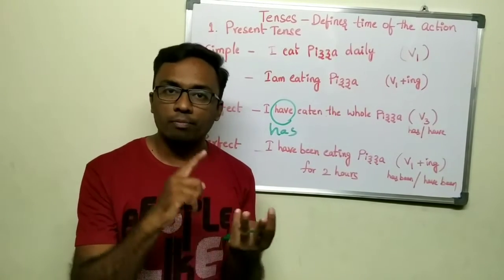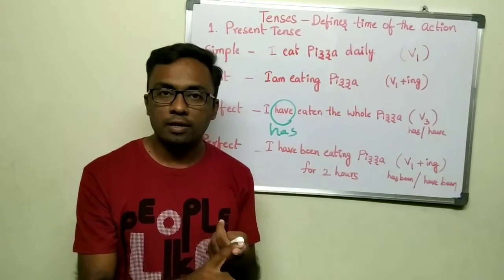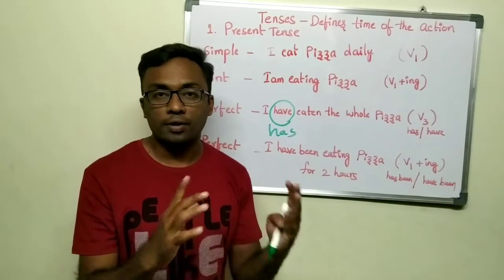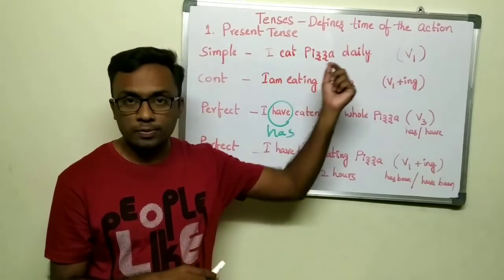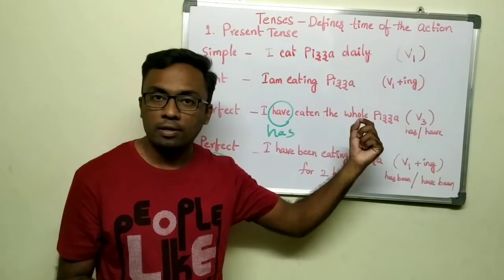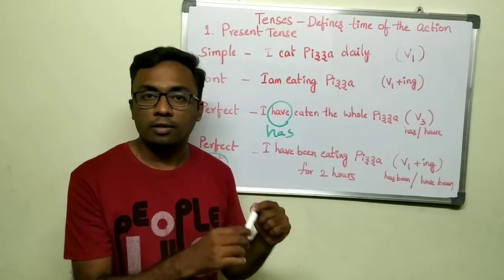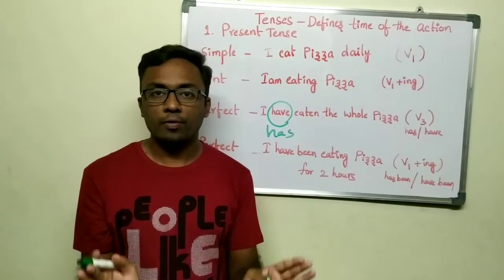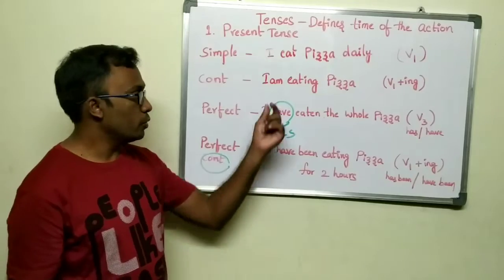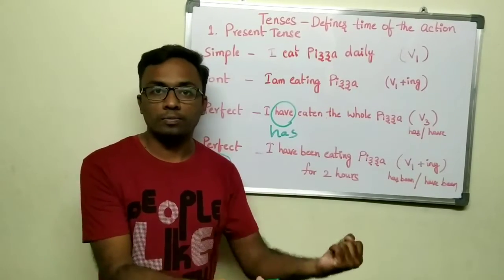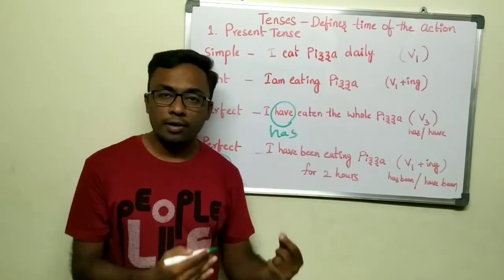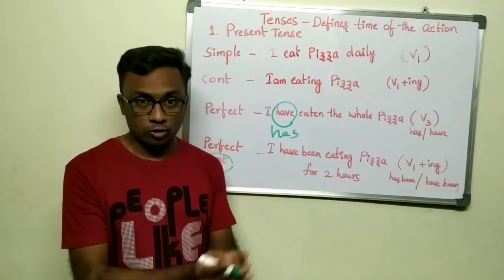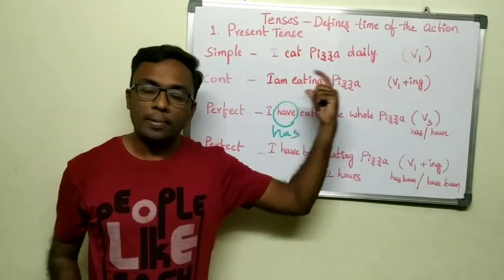So in present tense, we have the simple, continuous, perfect, and perfect continuous sub-states. The key things to understand are: which verb form to use — V1, V2, or V3 — and the difference between 'have' and 'has' depending on the person. You can substitute other verbs like drinking or running to gain perfection.